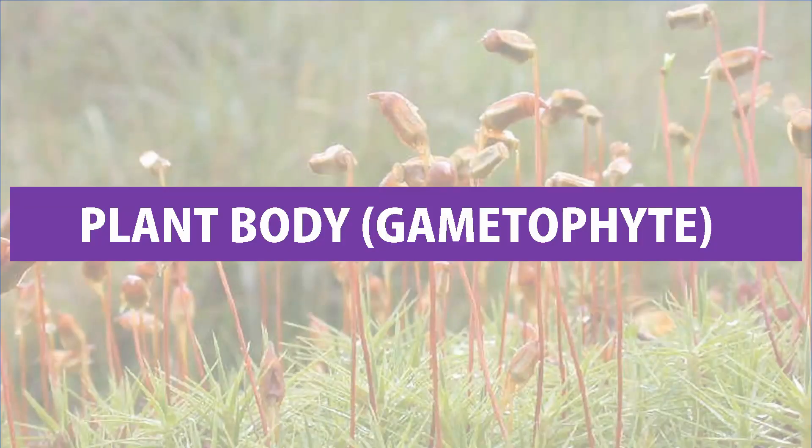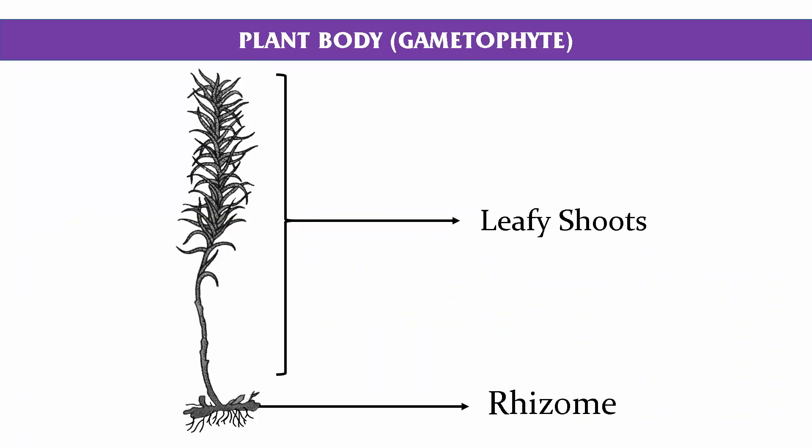Now the plant body, that is the gametophyte. The plant body of Polytrichum can be differentiated into two regions: an underground rhizome and erect aerial leafy shoots arising from the rhizome.